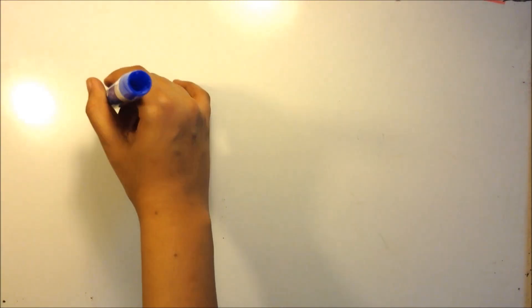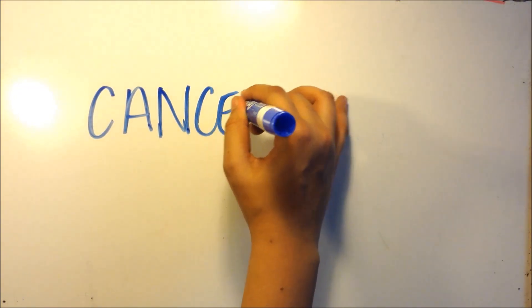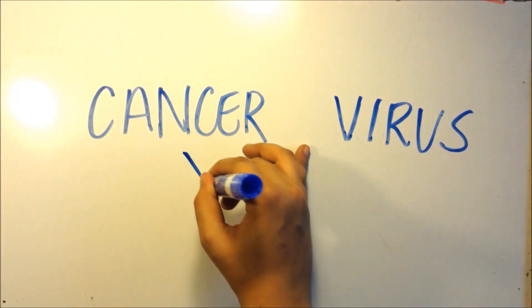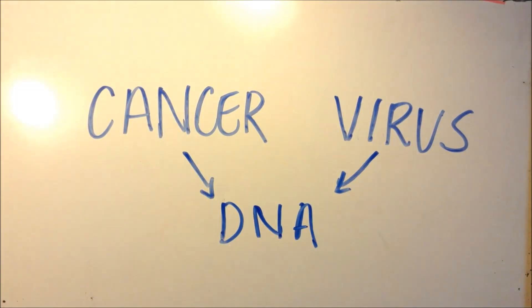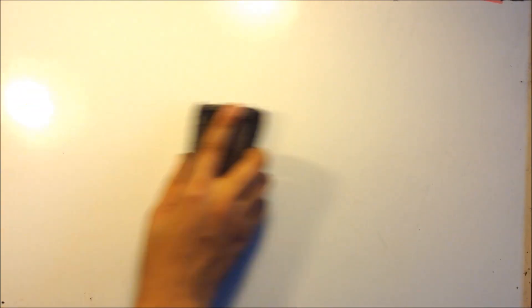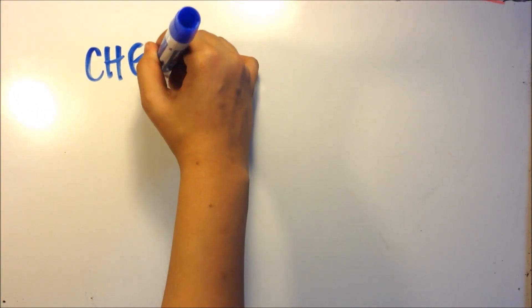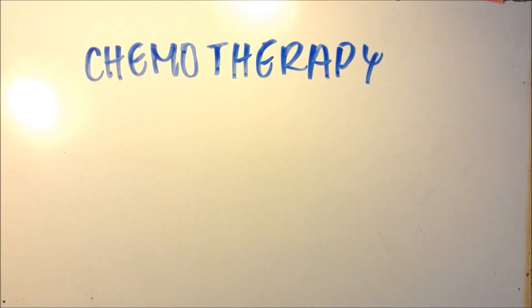Now, we know that cancer and viruses are two major components in oncolytic virotherapy. But how are they related? Well, there's a really simple answer: it's the DNA that we find within both of these entities, or the genetic material that we find. We see that in oncolytic virotherapy, DNA and genetic material have a huge role. But why do we even need that? Let's talk about chemotherapy and current treatments of cancer.